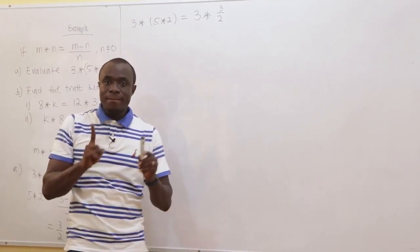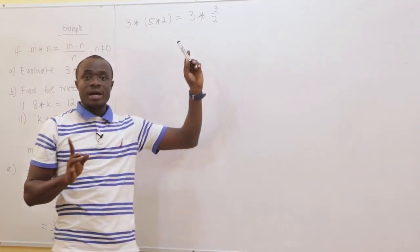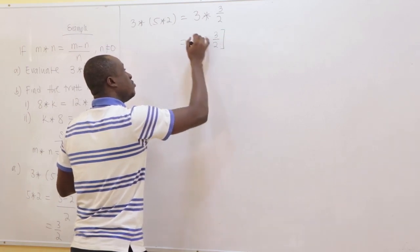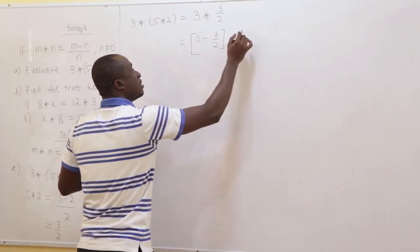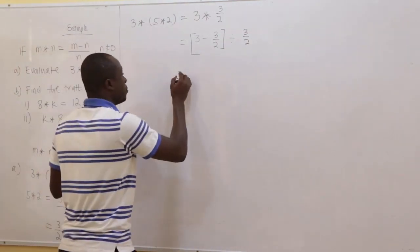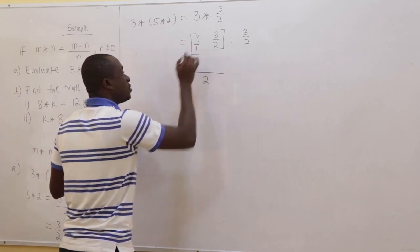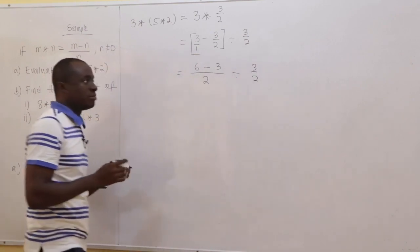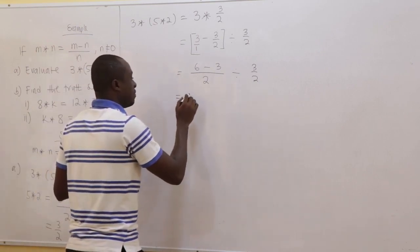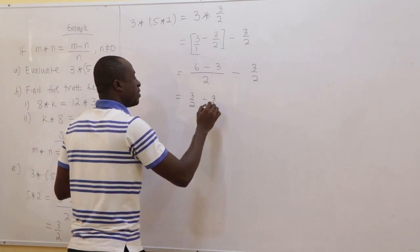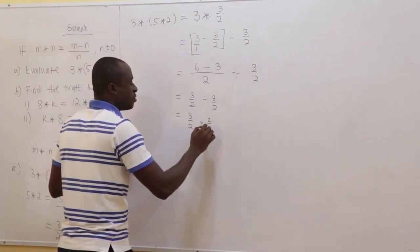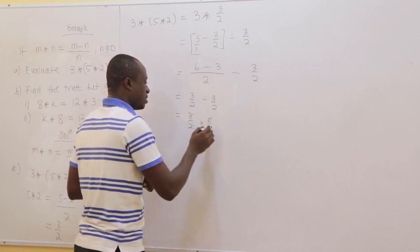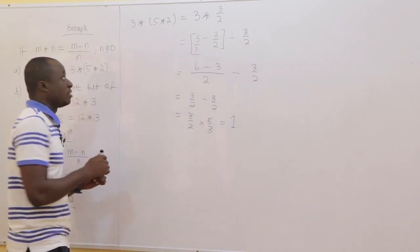Continuing: (3 − 3/2) / (3/2). The LCM is 2, so the numerator is (6−3)/2 = 3/2. So we have (3/2) ÷ (3/2) = (3/2) × (2/3) = 1. The 3s and 2s cancel, giving us 1. Very easy.